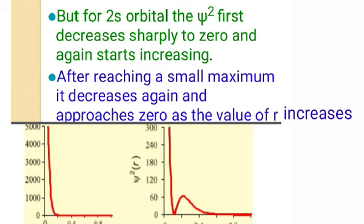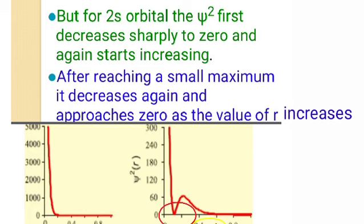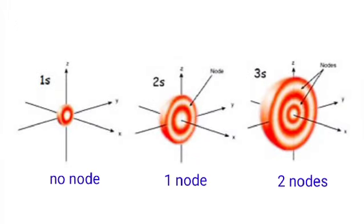In the case of the 2s-orbital curve, the probability density first decreases, then it again increases and approaches a maxima, then again it decreases. There is a region in this curve where the probability of finding the electron becomes zero — that is called the node or nodal surface. In the 1s-orbital there is no node, but in the 2s-orbital there is one node present.